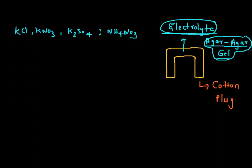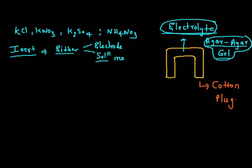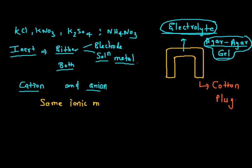A question comes: why only these electrolytes are used? The electrolyte should be inert — it should not react with either electrode or the electrolytic solution, that is, the metal ions. That is what is meant by the electrolyte being inert. At the same time, the second criteria is that the cation and anion of the electrolyte should have the same ionic mobility. Ionic mobility is a simple term which means the speed of the ion.